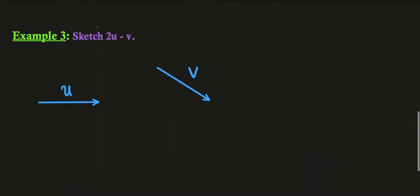Here's the last example: sketch 2u minus v. So we'll double u, so that's 2u. Minus v will be this vector here, so that's roughly minus v there, and so the resulting vector here is 2u minus v.